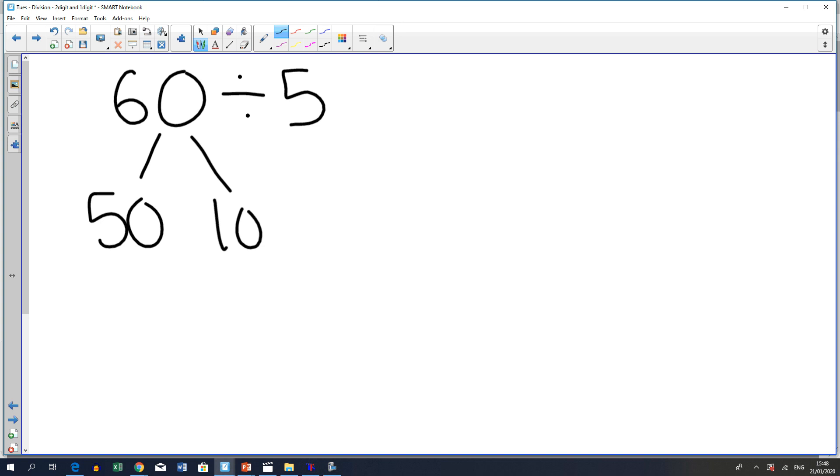So, what you would do is then you would see how many 5s go into 50. So, 50 divided by 5 is equal to 10. The answer is 10 for this one. Then I see how many 5s go into 10. So, 10 divided by 5 is equal to 2. Now, then I add my 10 and my 2 and I get my answer which is 12.